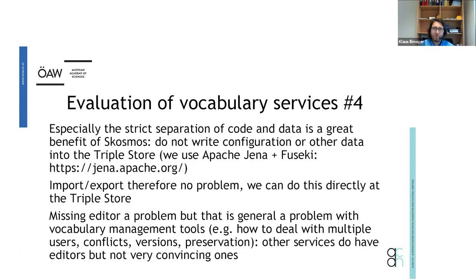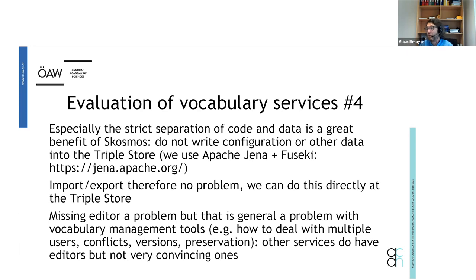In the end we decided on COSMOS. Key points were the well-maintained API and Swagger file — very helpful for applying other tools on the API — good documentation, readable source code, open source nature, and the clear separation between code and data, meaning COSMOS doesn't touch the triple store. The minus points: no integrated editor, no direct import/export. However, other tools with editors came with disadvantages around handling multiple users, conflicts, versioning, and data preservation, so we decided for COSMOS on the front-end side with a different approach for editing.